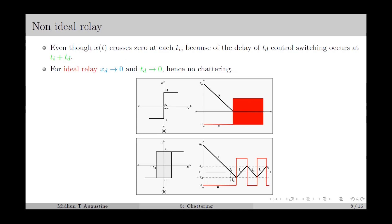The response of this system for an ideal relay is shown in the first plot, where we can see the state starts from the initial value and converges to 0. The second plot shows the response with a practical relay, where there is a switching delay denoted by td. Even though x crosses 0 at times t1, t2, t3 (or generally ti), due to the delay td, the control switches at ti plus td. Because of this delay in switching, the variables oscillate, and this leads to Chattering. For an ideal relay, xd equals 0, therefore td also equals 0, and hence there will be no Chattering.